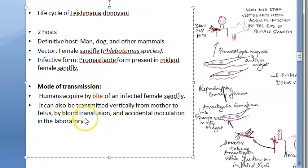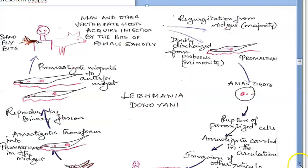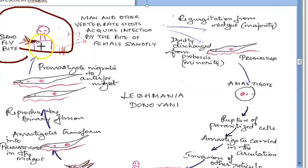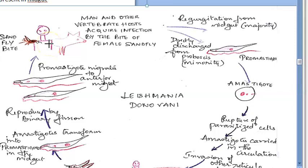Blood transfusion can actually transmit leishmaniasis because it is a hemoflagellate living in the blood, so transmission from one person to another by blood is possible, as is mother-to-fetus transmission and accidental lab inoculation. In the life cycle: the infected female sandfly bites a man or other vertebrate host, going deep enough to reach the blood, transmitting the promastigotes.